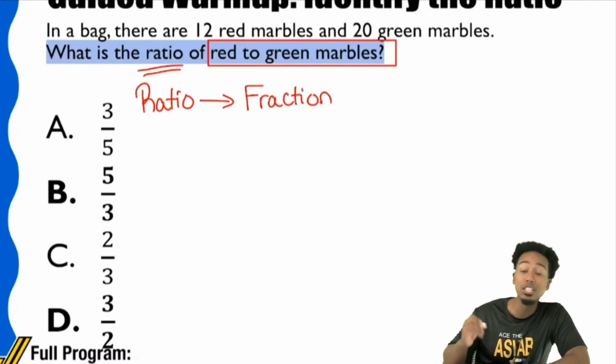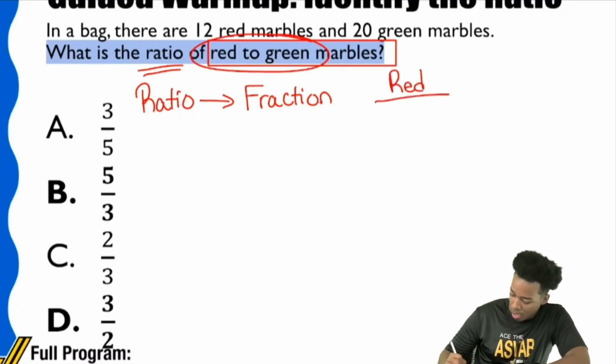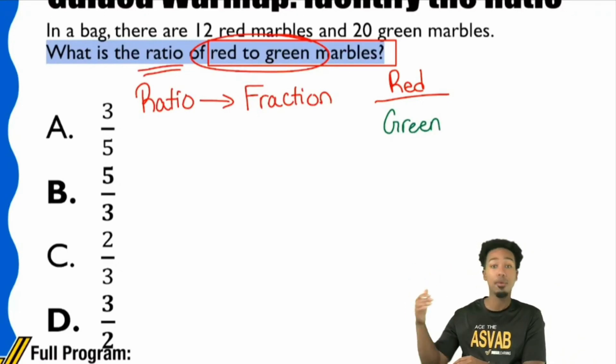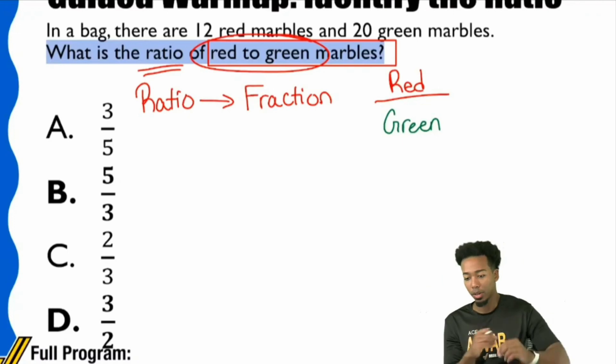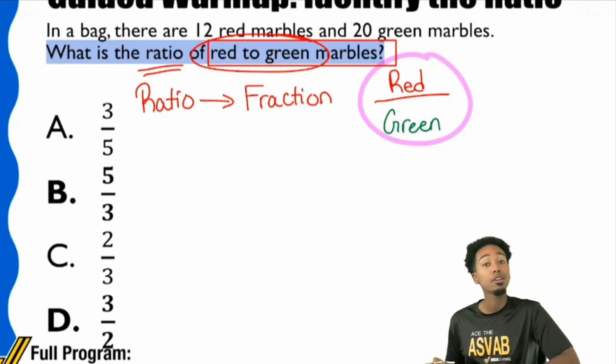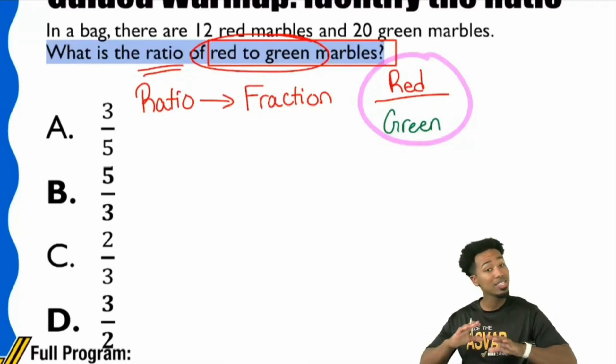In this problem, they're asking you to compare red to green. That means we need red up top and green on the bottom, not the other way around. The order matters. If you were to put green marbles up top and red on bottom, you're done. Not going to work. Ratios and fractions are the same thing. All this problem is asking you to do is write a fraction that's comparing red to green marbles. Now we can look at the actual information.